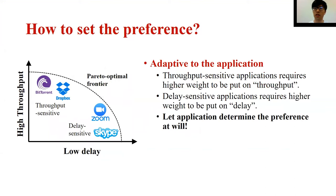Meanwhile, congestion control for the integrated network serves diversified applications at the same time. Delay-sensitive applications, such as online meetings, require higher weight to be put on delay. Throughput-sensitive applications, such as file synchronization, require higher weight to be put on throughput. To cope with all these requirements, the congestion control should be able to let the application determine the preference at will.